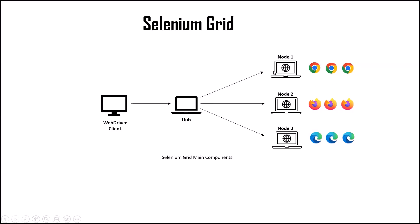We can have any number of nodes connected to the Hub, and we can have any number of browser types, nodes, and browser instances connected to each node. Based on your automation test suite size, you can create multiple nodes to reduce execution time. Or if you want to perform cross-browser or cross-platform testing, you can create different nodes based on the different operating systems you want to support.